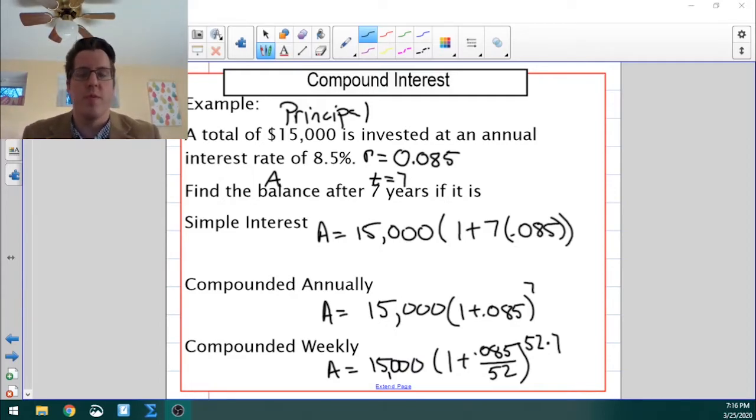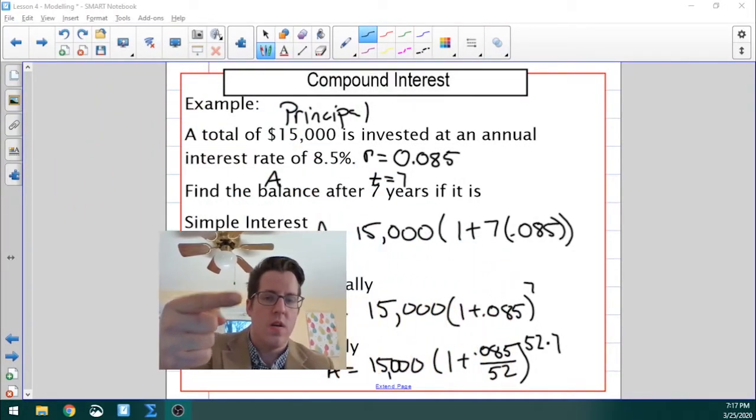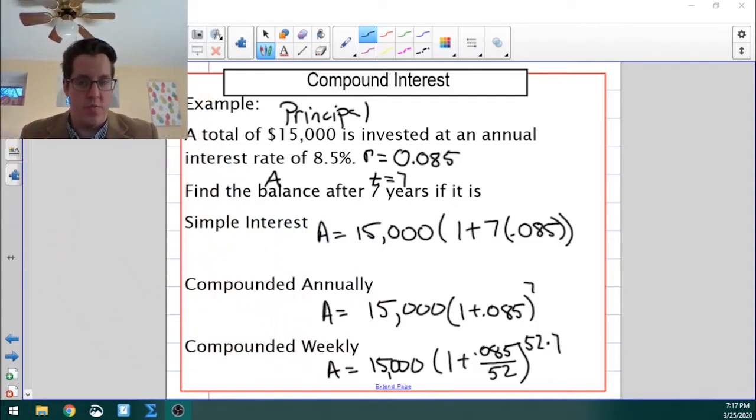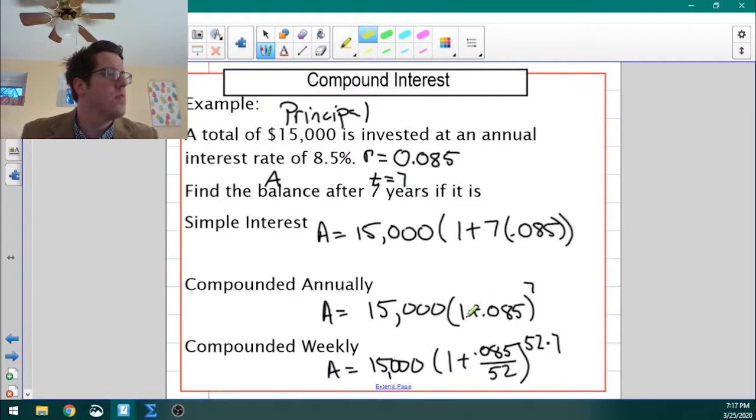So I just set up the formulas there. Notice this simple interest formula is linear. It's going to be the same amount per year. The annually compounding interest, because the place that I'm plugging the 7 in is in the exponent right here, that is going to be an exponential function. Same thing with compounding weekly. From Algebra 1, I hope you remember that because in the annual compounding, we have 1 plus .085, that's going to be growth. That's why our money is getting bigger. Later on, you'll have problems where things lose value, and that would be 1 minus something, because it's losing value. It would be exponential decay.